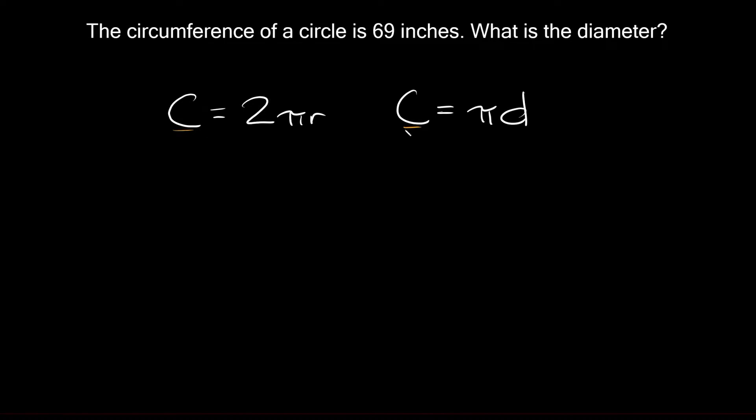C just stands for the circumference of a circle. On this side we have 2 times π times r, and r is the radius. On this side we have π times d, and d is the diameter.